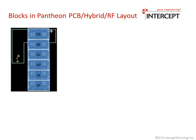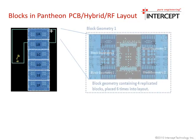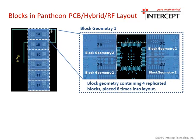But block technology doesn't stop there. Notice that the top-level block, shown here six times, also contains four identical block circuits copied within the main block. With Intercept, any number of blocks can be placed within blocks, reducing repetition down to the absolute minimum.